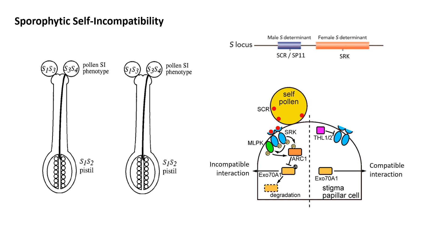In compatible interactions, thioredoxin H-like proteins called THL1 and THL2 interact with the S-receptor kinase and suppress its phosphorylation activity, thus inhibiting further signal transduction for self-incompatibility expression. Hence, thioredoxin-like proteins function as inhibitors of SRK-mediated signaling and bring about a compatible pollen-stigma interaction.